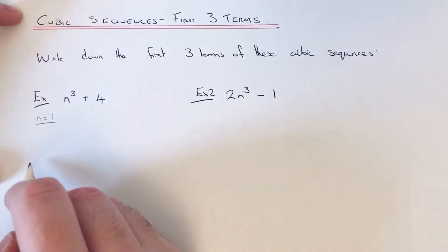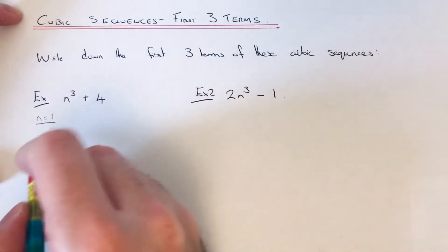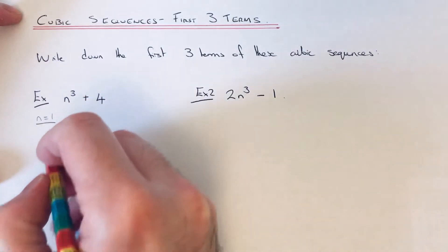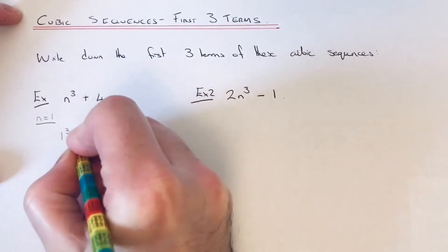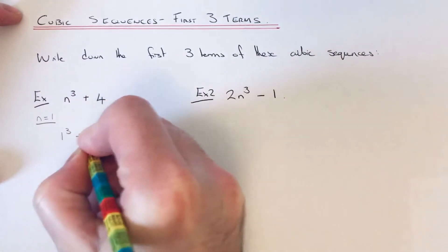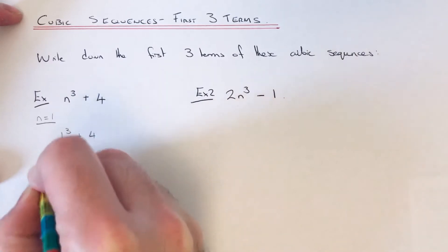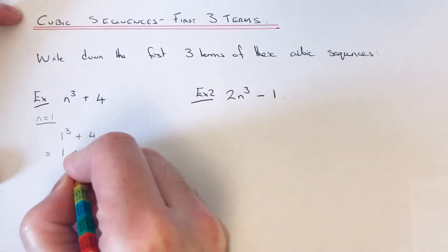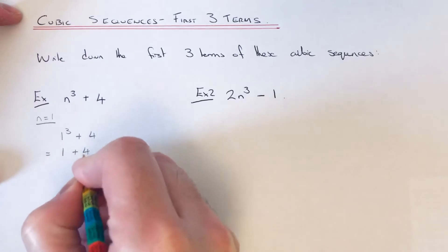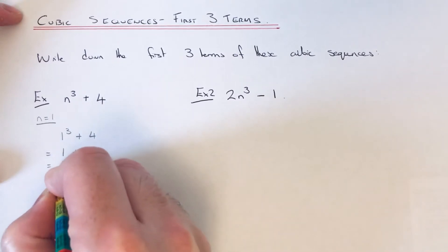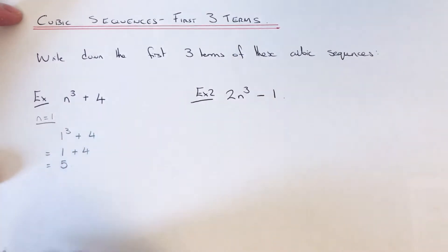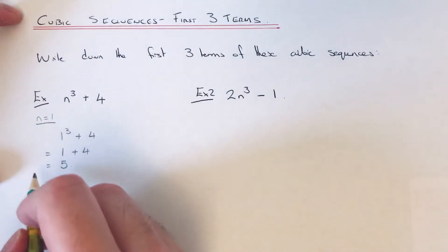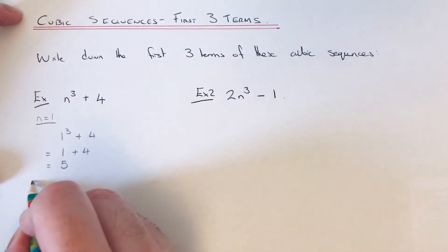We need to substitute 1 into this expression, so it'll be 1 cubed plus 4. 1 cubed is 1, add on the 4 gives an answer of 5. So that is our first term.